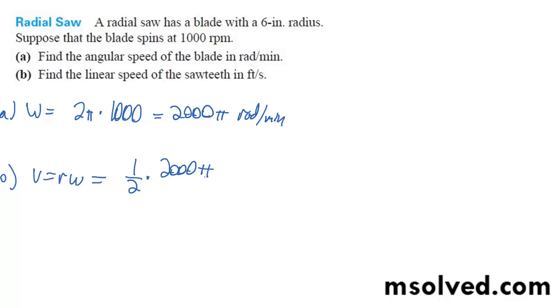So we're going to get 1,000 pi feet per minute, and then furthermore, divide this by 60, so we're going to get 1,000 pi over 60.